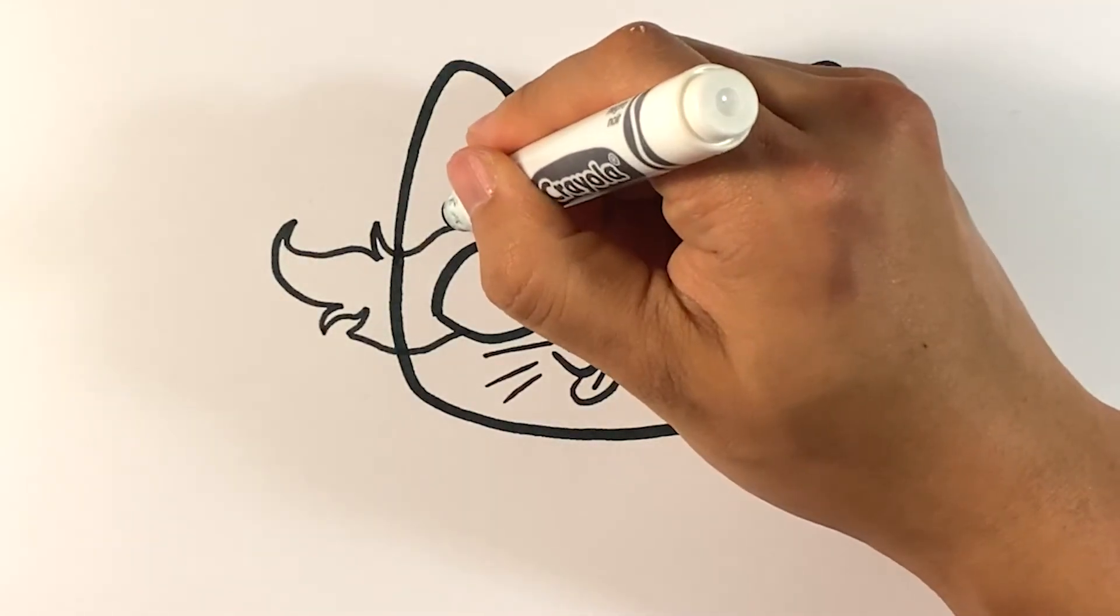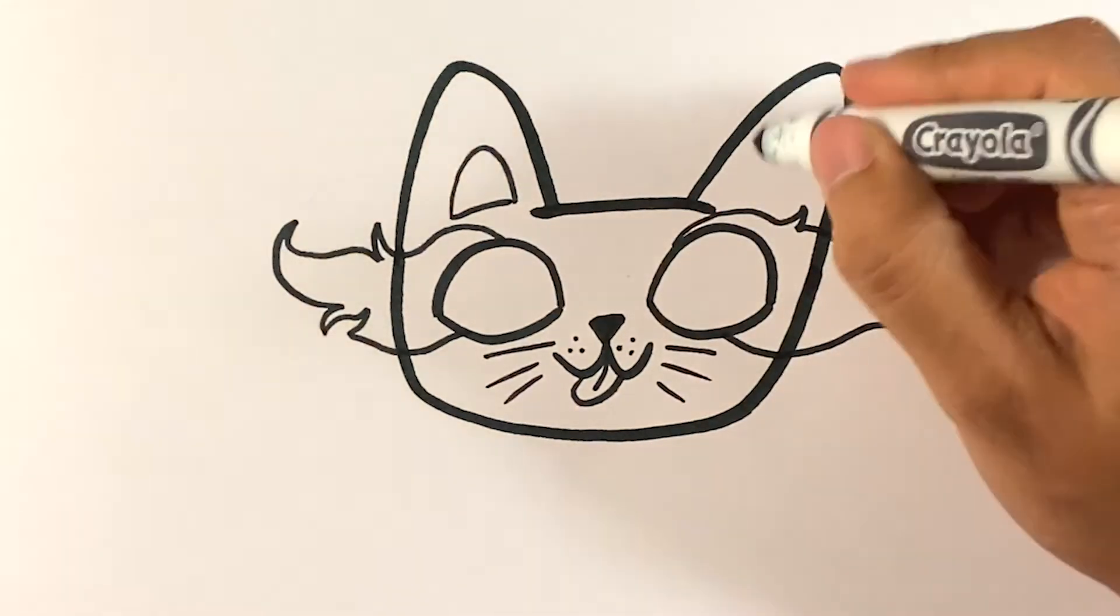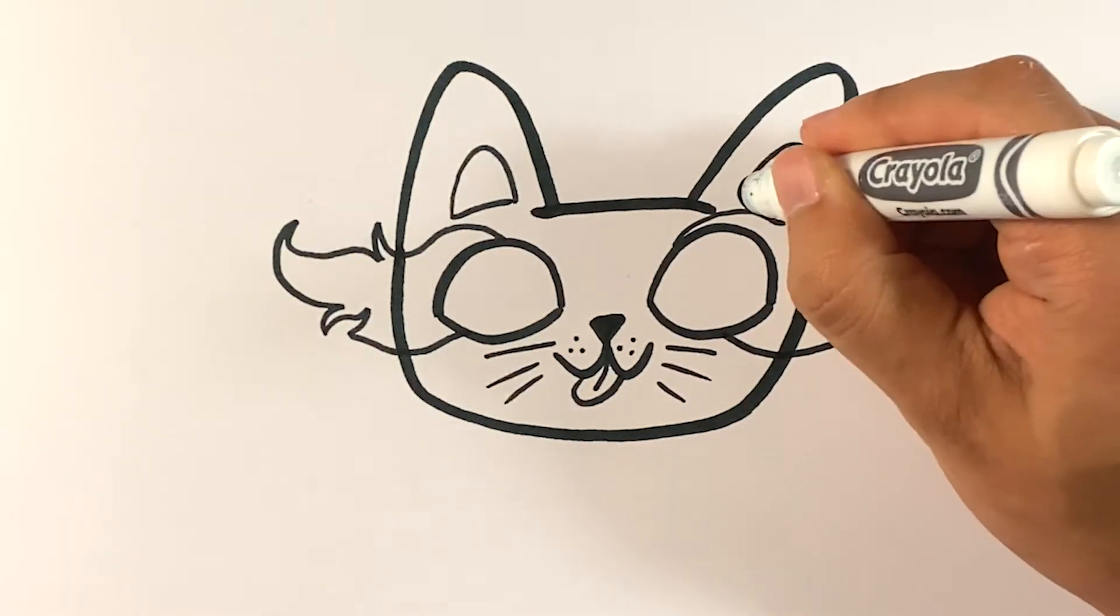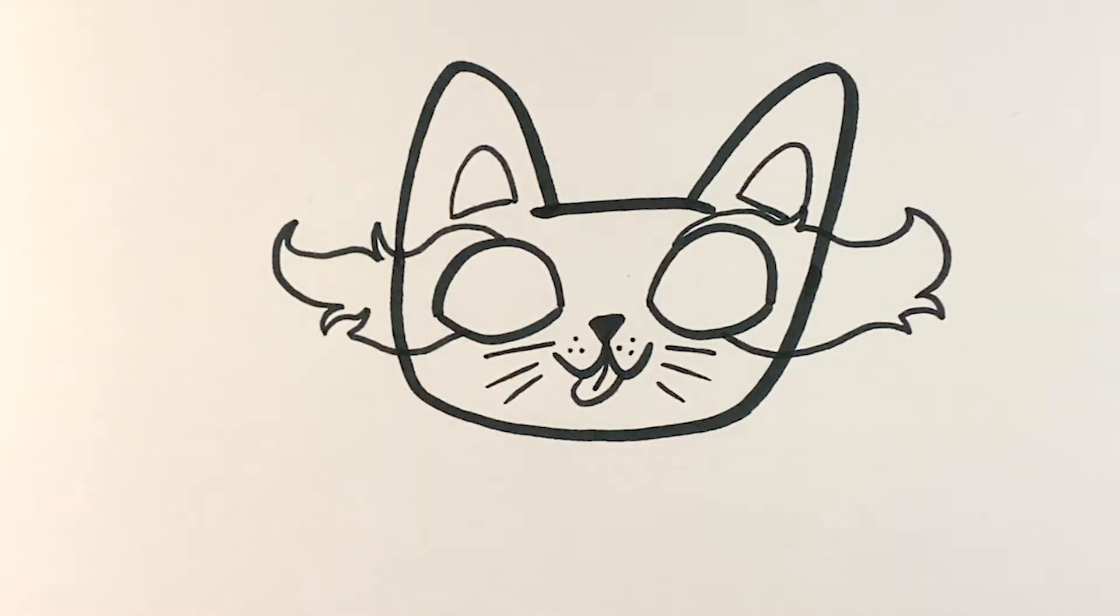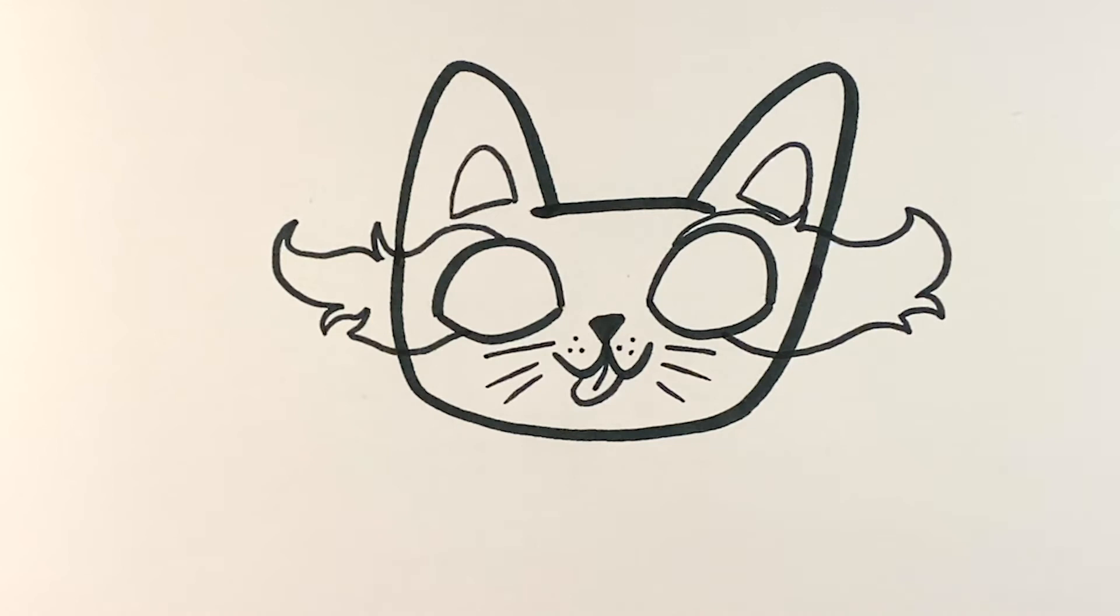And I'm gonna draw over here what I forgot to do, which is the inside of the ear for the cat. Okay, we're doing good. So what we're gonna do now is draw the cat body.